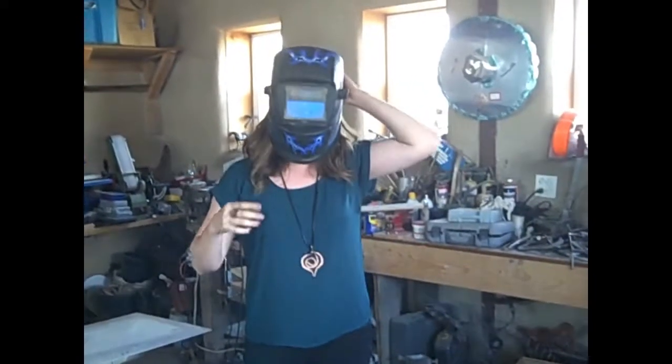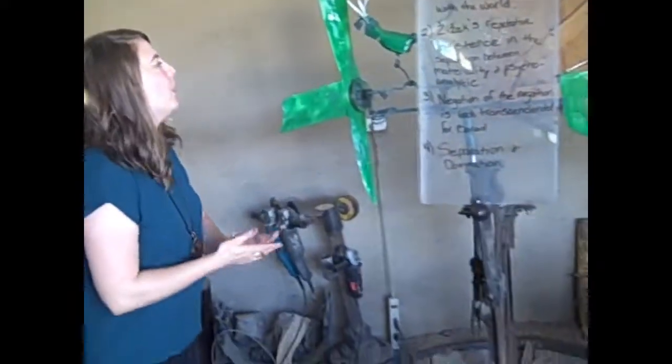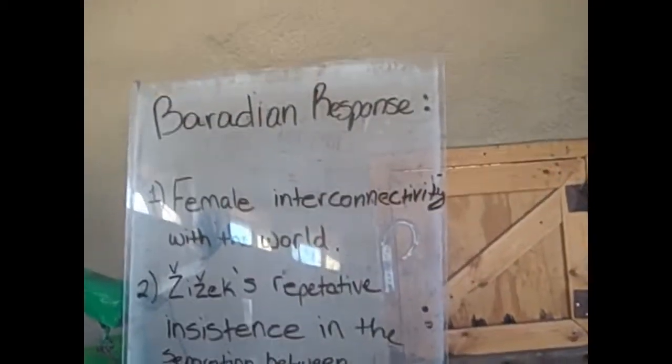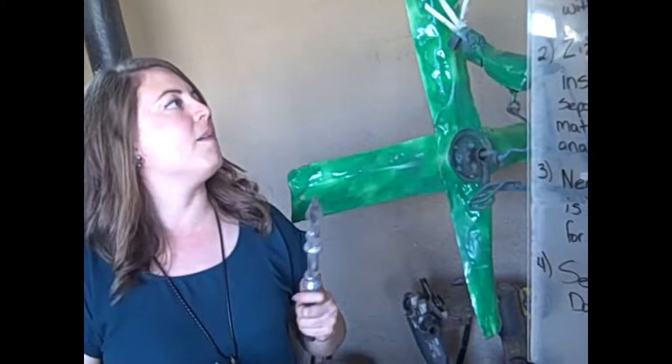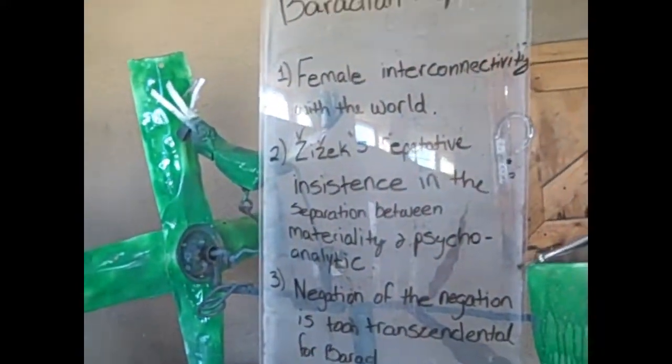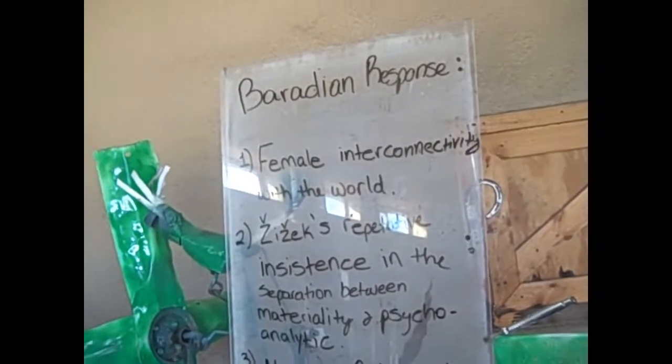In reading all these male philosophers, it's really refreshing to take off the male gaze and read Barad's view of the world, talking a little more about the possible Baradian responses to Zizek's Less Than Nothing. One would be that he might be missing the female interconnectivity with the world — he gives one perspective based on Hegel and Freud, but there's no female perspective. Barad is bringing in the female perspective, as females generally have more of a connectivity with the earth.